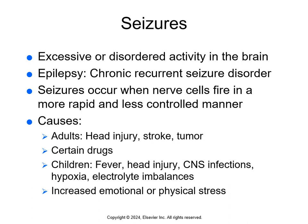A seizure results from excessive or disordered, disorganized electrical activity in the brain. A seizure disorder is someone who has repeated seizures, sometimes called epilepsy. When the brain works normally, electrical impulses are organized and help the brain communicate with the rest of the body. Abnormal electrical impulses occur when nerve cells fire more rapidly and with less control, which can lead to seizures.